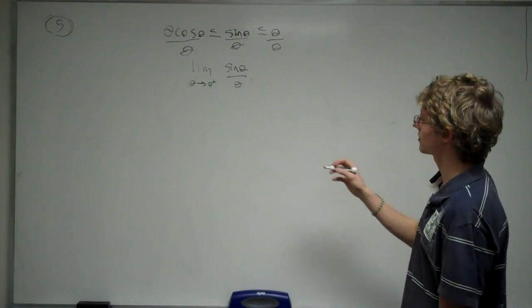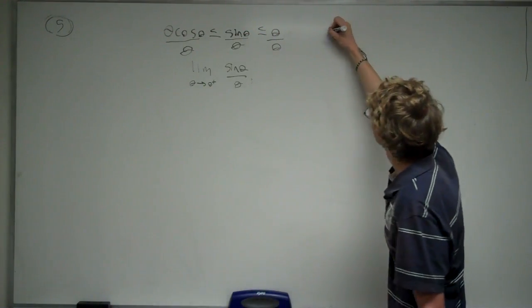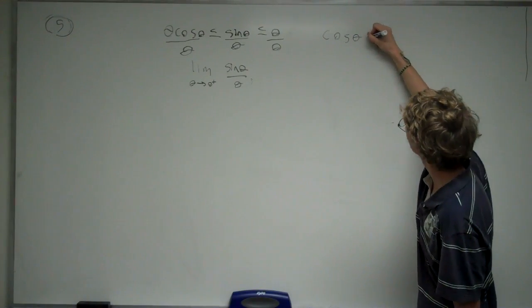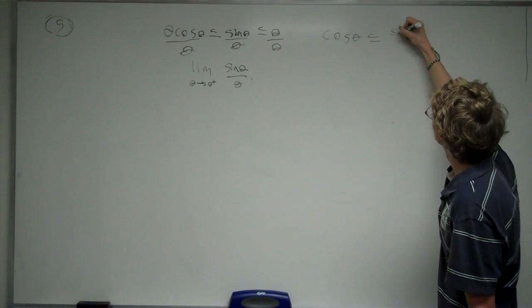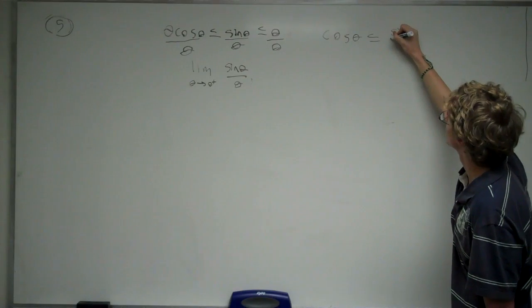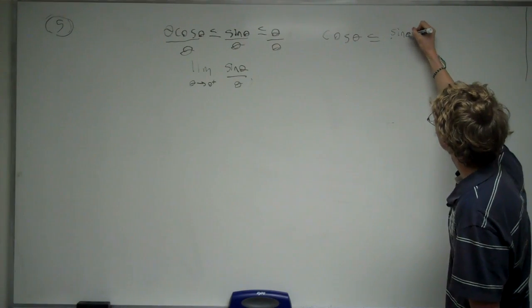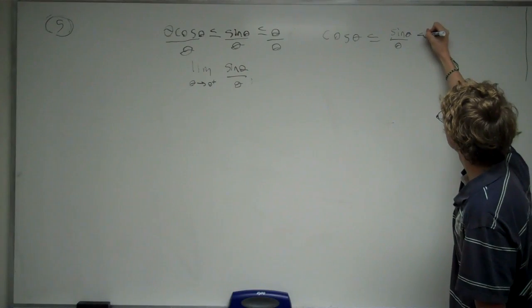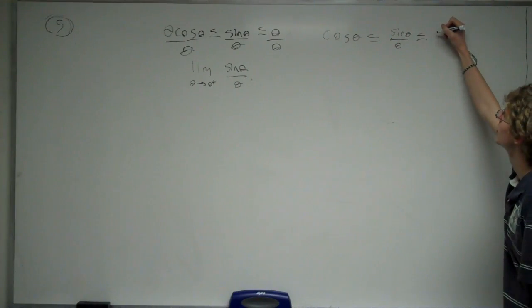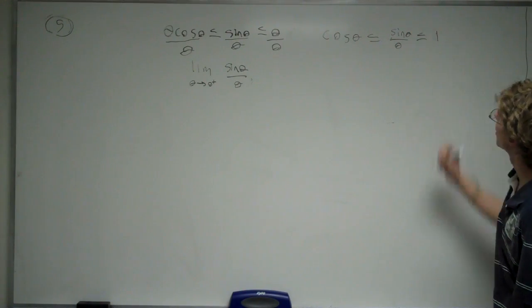Now, what's that? That's going to give us cosine of theta, which is less than or equal to sine of theta divided by theta, which is then less than or equal to 1.